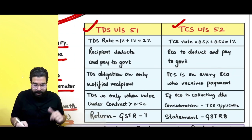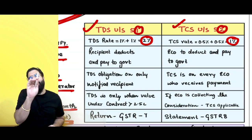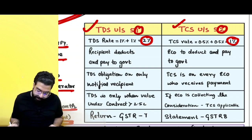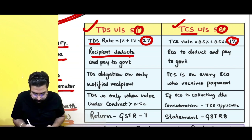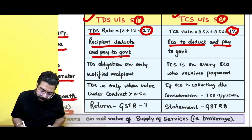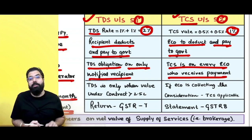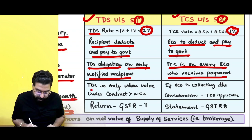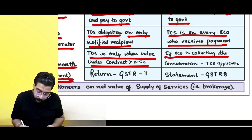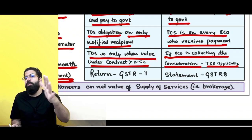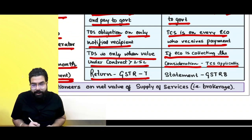TDS vs TCS differences: TDS is under Section 51 at 2%; TCS is under Section 52 at always 1% — remember: 51 → 2%, 52 → 1%. TDS: recipient deducts and pays to government; TCS: e-commerce operator deducts and pays. TDS obligation is only on notified recipients; TCS is on every e-commerce operator who receives the payment. TDS applies only when value of contract is greater than 2.5 lakh rupees; TCS has no value limit — even 1 rupee collected by e-commerce operator requires TCS deduction. TDS return is GSTR-7; TCS return/statement is GSTR-8.